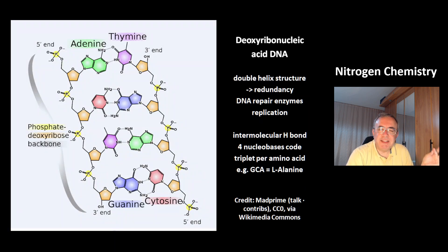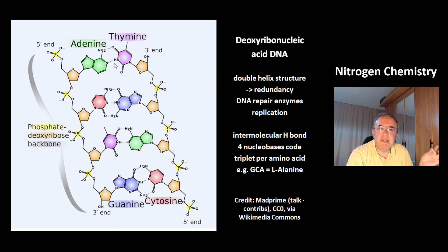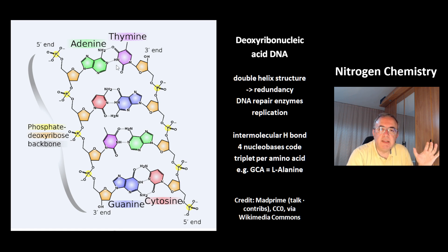This is another very important nitrogen compound — deoxyribonucleic acid, DNA. It has three components: the phosphate deoxyribose backbone, and the nucleobases. There are four nucleobases in two pairs: adenine and thymine make a pair, and guanine and cytosine make another pair. One important phenomenon that gives the double helix its structure is the intermolecular hydrogen bond, shown here in dotted lines. This works because the nitrogen atom has a free electron pair, and the nitrogen-hydrogen bond has enough polarity. The double helix structure means you have redundancy — if there is minor damage in one helix, DNA repair enzymes can repair the damage using the information from the intact other helix.